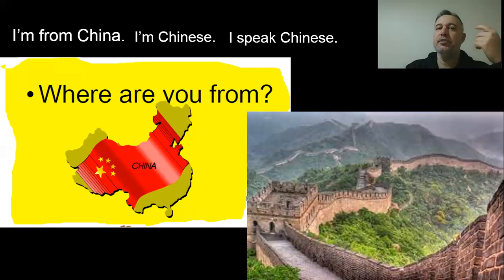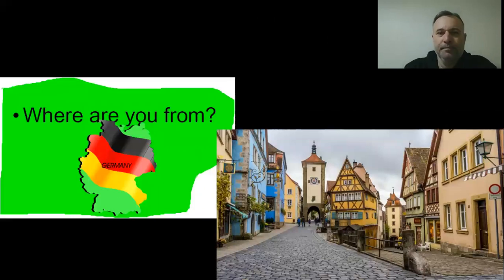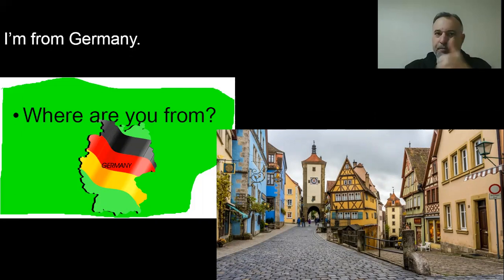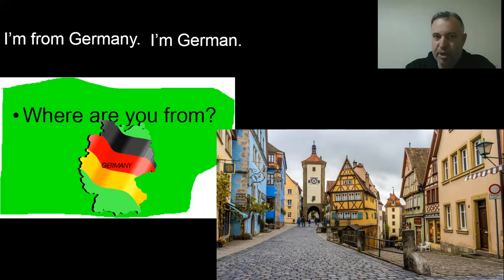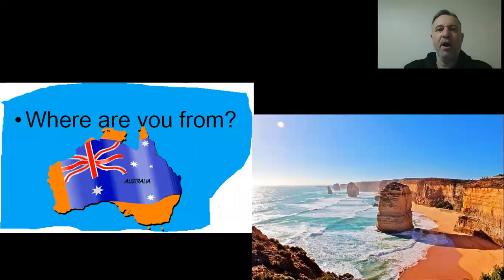Next example: 'Where are you from? — I'm from Germany. What is your nationality? — I'm German. What language do you speak? — I speak German.' And another: 'Where are you from? — I'm from Australia. What is your nationality? — I'm Australian. What language do you speak? — I speak English, of course. Australia speaks English — it was a former British colony, that's why they speak English.